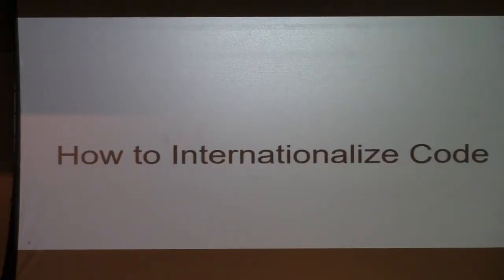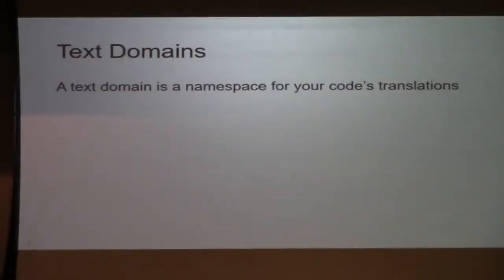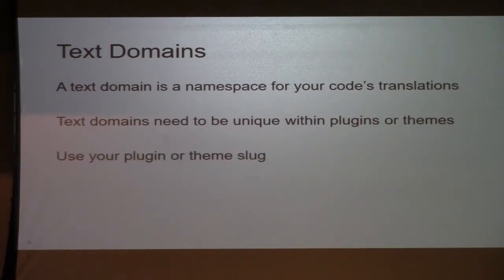Now let's talk about how to actually do it. The first thing you need to understand is a text domain. A text domain is a namespace or group for your translations. It needs to be unique across plugins or themes — two plugins can't have the same text domain. The best way to ensure uniqueness is to use the directory name of your plugin or the plugin/theme slug, because that's already unique to the file system. On WordPress.org, that's actually a requirement if you want to use language packs.